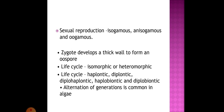The zygote develops a thick wall to form an oospore. Life cycles are isomorphic or heteromorphic. There are different types of life cycles: haplontic, diplo-haplontic, haplobiontic, and diplobiontic. Alternation of generations is common in algal life cycles.